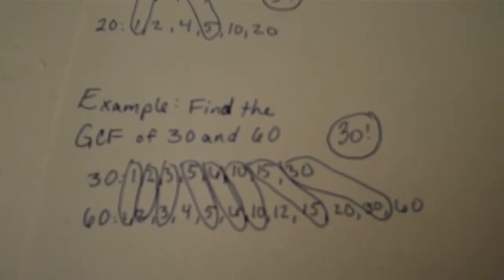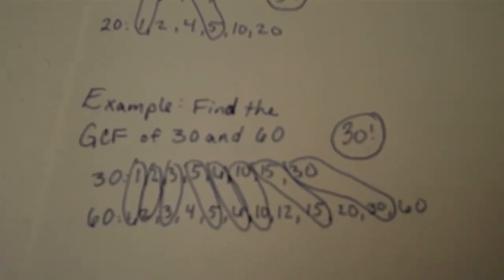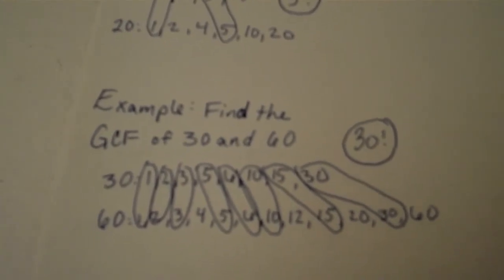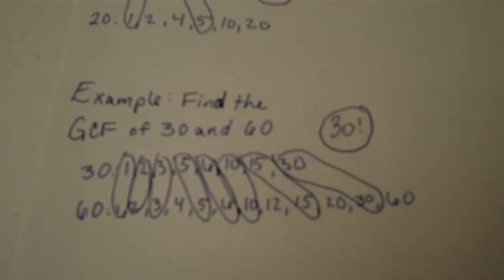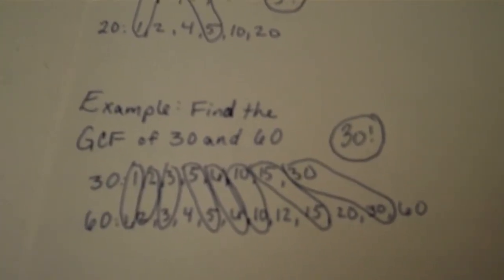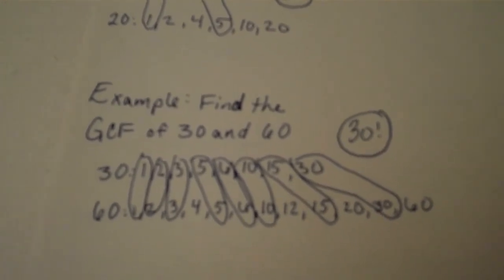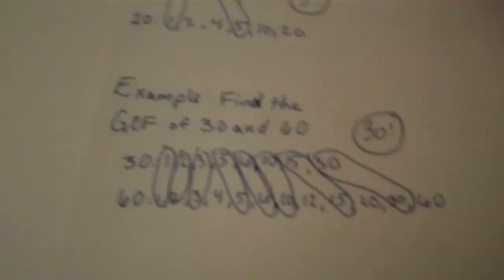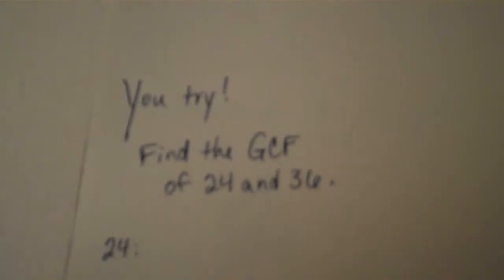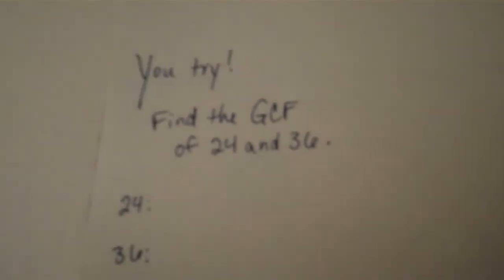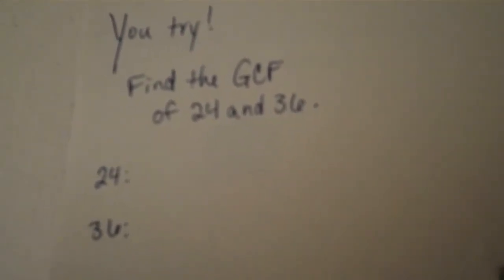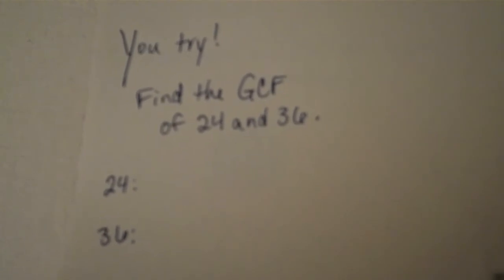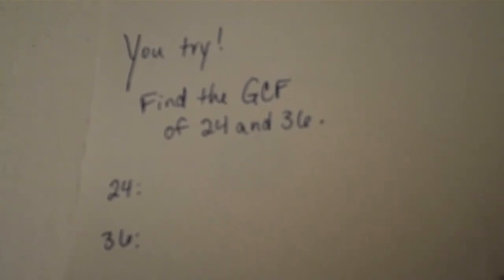Now you try. I'm going to show you a problem, and I'd like you to pause the video while you solve it in your notebook, then start the video and I'll show you the solution. The problem is: find the greatest common factor of twenty-four and thirty-six. Now pause while you solve the problem.